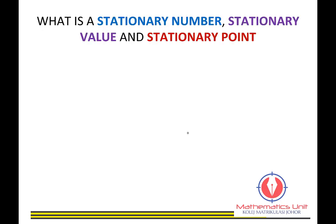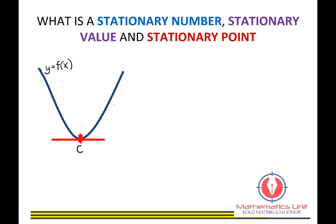What is a stationary number, stationary value, and stationary point? Say you have a curve y equals f(x). A stationary point of a function is a point where the derivative equals zero. So if you differentiate, f prime at point c equals zero — this is where you have a stationary point. Graphically, this corresponds to a point on the curve where the tangent to the curve is a horizontal line.